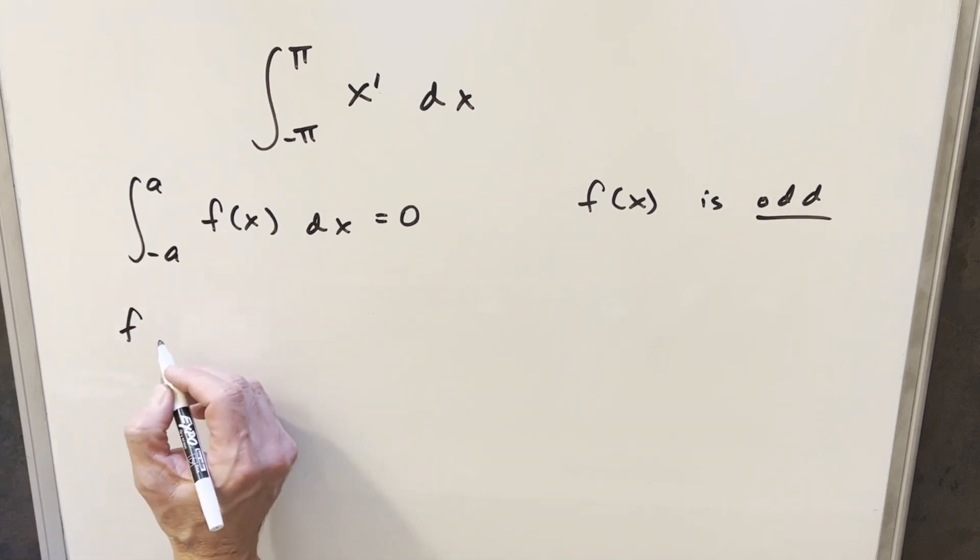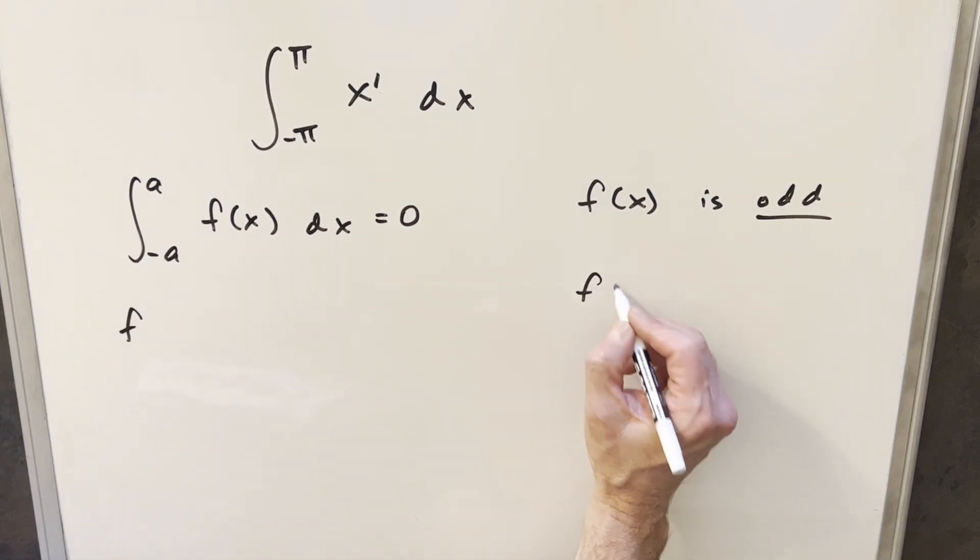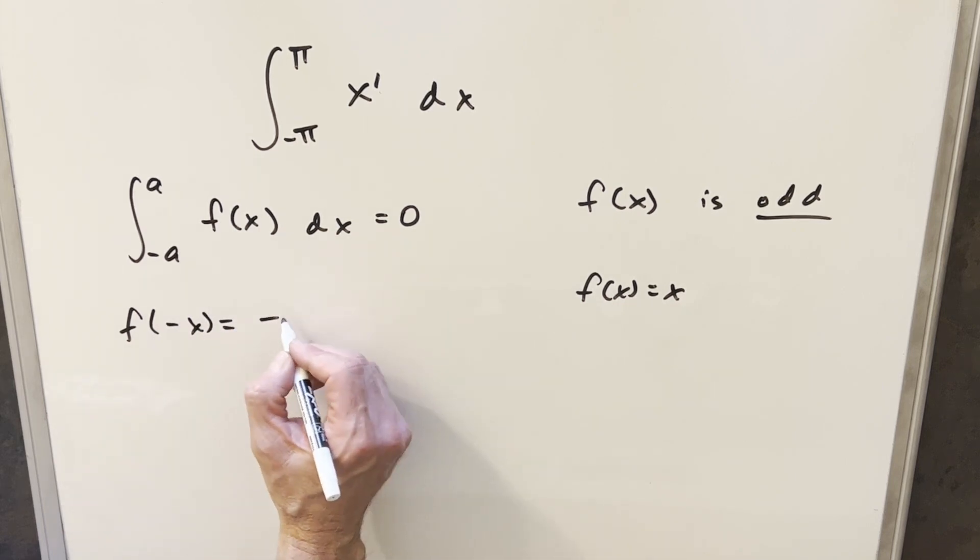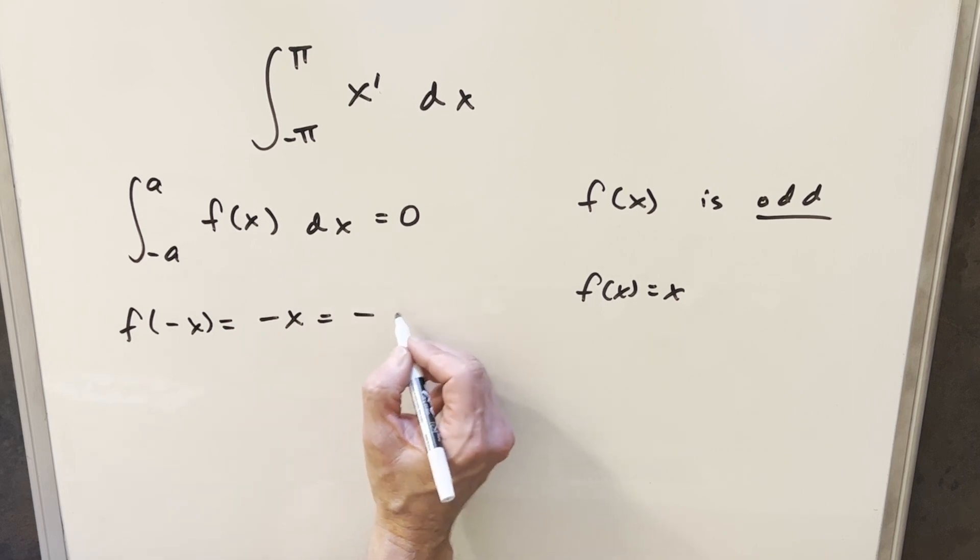That way you can actually check it. If our f of x is equal to x, then our check for an odd function, if we plug in minus x, then of course we have minus x, and this is the same thing as minus f of x, and this is our definition for an odd function.